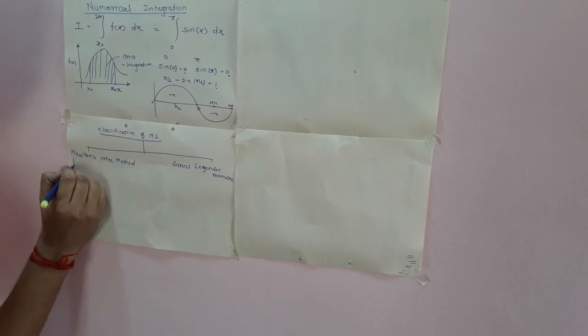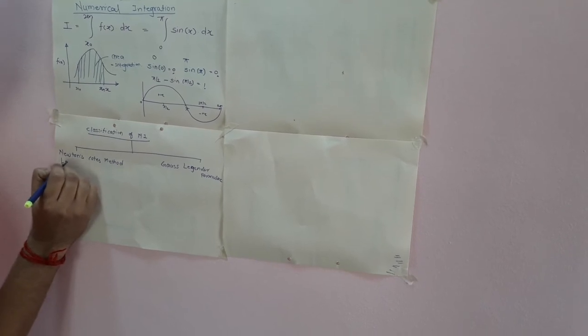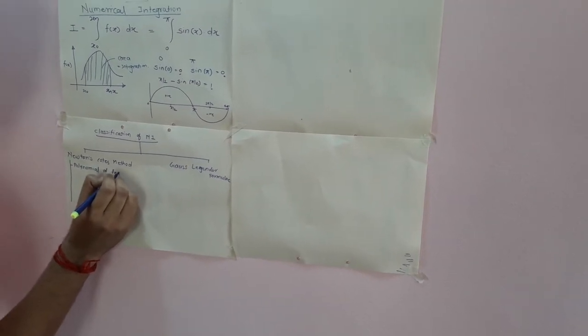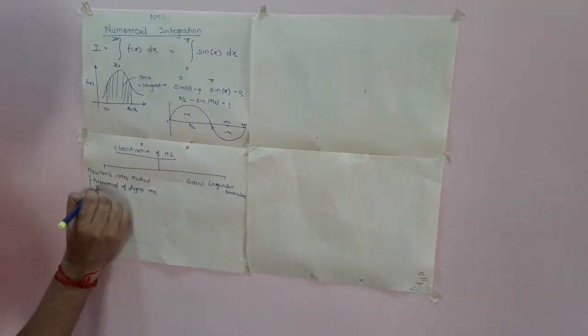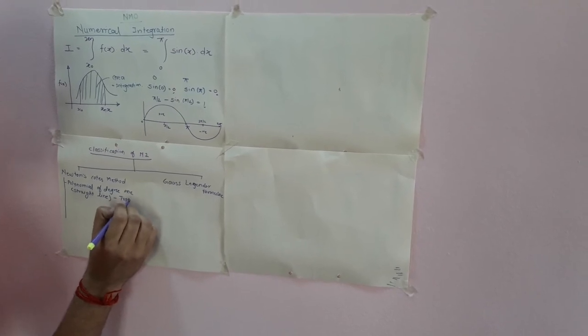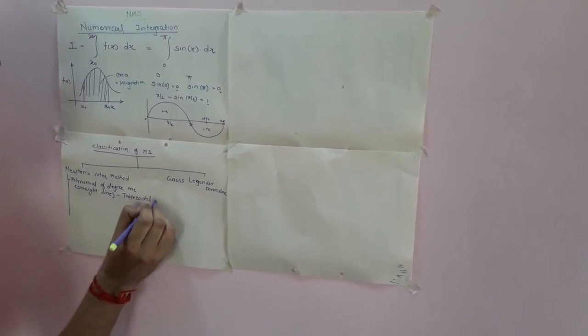Now this Newton's Cotes method was developed by the scientist Newton. It is classified into different categories depending on what degree of polynomial we use. If we use a polynomial of degree 1 — which is the equation of a straight line — then the methodology suitable for this type of problem is the Trapezoidal Rule.